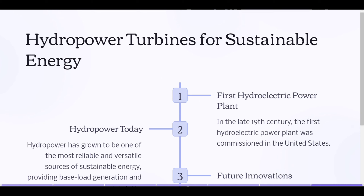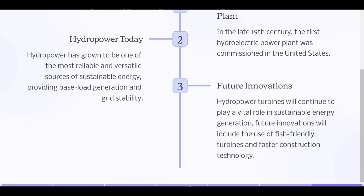Hydropower turbines for sustainable energy: In the late 19th century, the first hydroelectric power plant was commissioned in the United States. Hydropower has grown to be one of the most reliable and versatile sources of sustainable energy, providing base load generation and grid stability. Hydropower turbines will continue to play a vital role in sustainable energy generation; future innovations will include the use of fish-friendly turbines and faster construction technology.